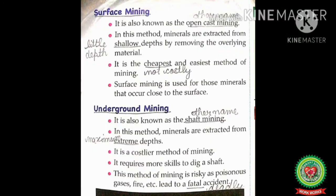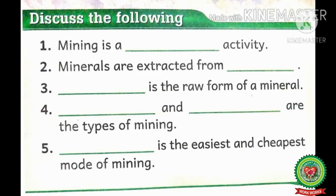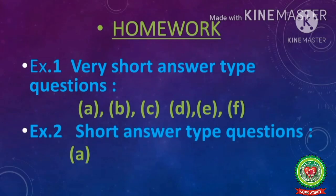I hope today's topic is clear to all. Your homework is to re-read today's topic and write the terms on your copy. Also, discuss the following on book at page number 57, and do questions A, B, C, D, E, and F of Exercise 1 — very short answer type questions — and question A from Exercise 2 — short answer type questions. Thank you.